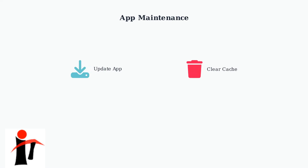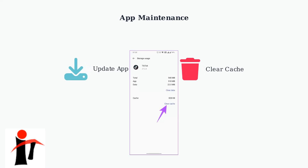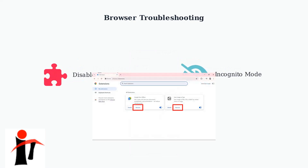Keep your TikTok app updated and clear its cache regularly. Outdated apps and accumulated cache data are common causes of verification failures. If you're using TikTok in a web browser, disable extensions that might interfere with verification, or try using incognito mode for a clean browsing environment.